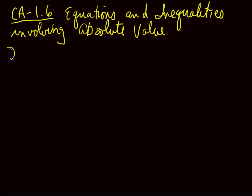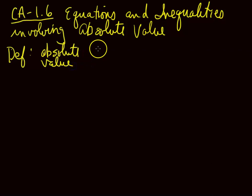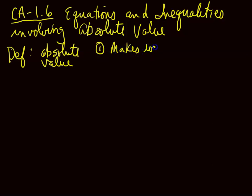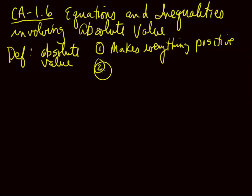First of all, let's define the absolute value. There are several definitions. The first one you might have learned is it makes everything positive. That's okay for numbers, but it's not always helpful. Distance from zero on the number line is another definition.